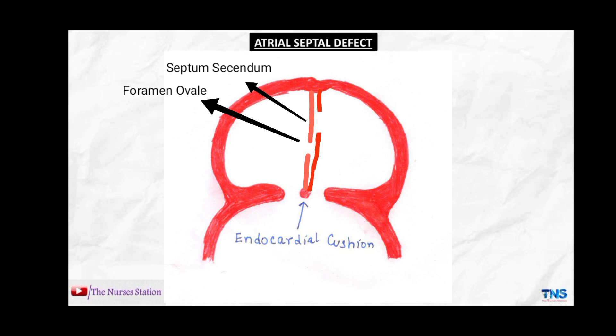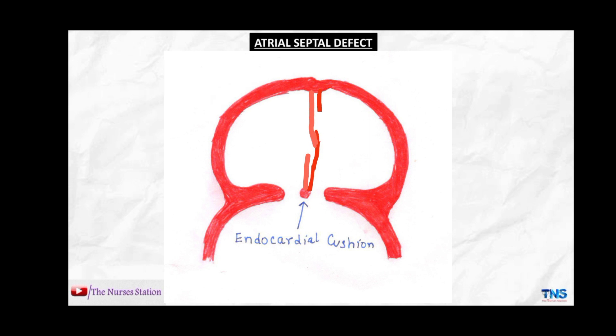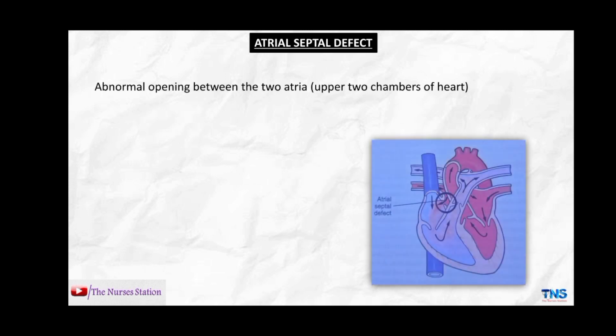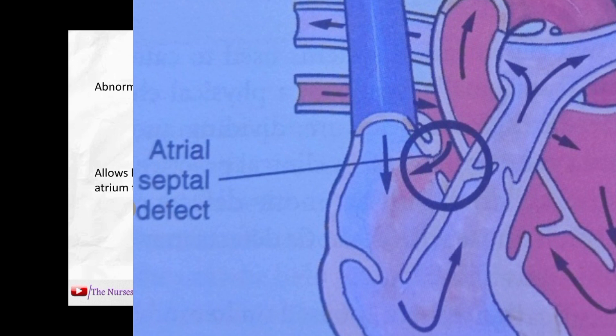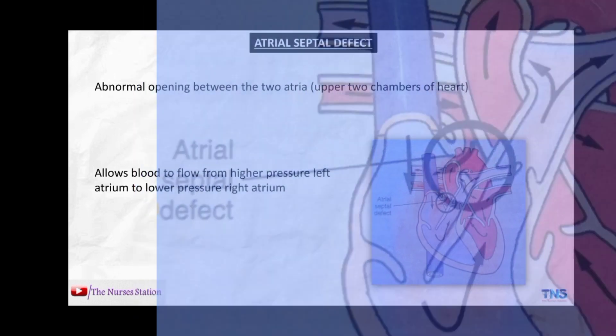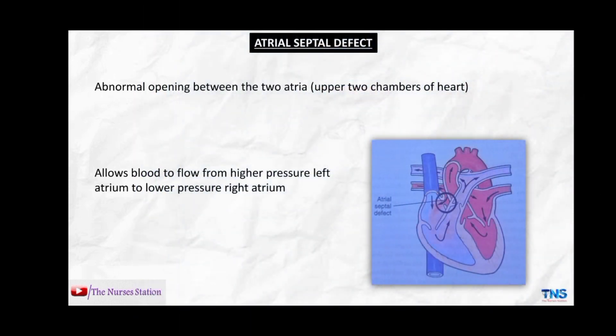The foramen ovale allows blood to flow from the right atrium to the left atrium in the fetal heart, but it closes soon after birth. If the foramen ovale fails to close after birth, it gives rise to the atrial septal defect. The atrial septal defect is defined as an abnormal opening between the two atria that allows blood to flow from the higher pressure left atrium to the lower pressure right atrium.